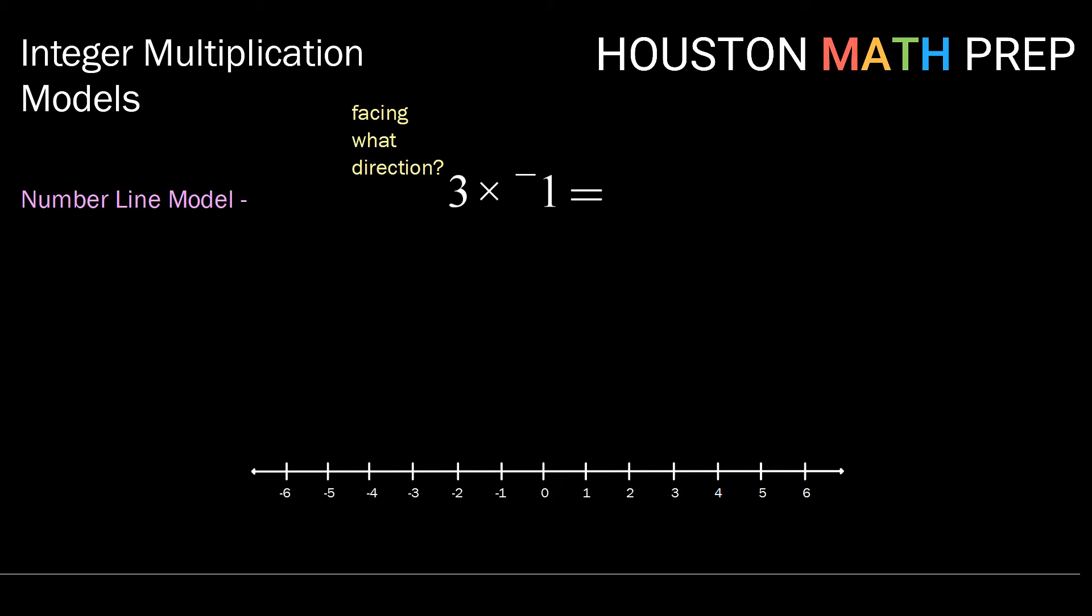Our first number, or the sign of our first number, tells us what direction to begin facing. Since we have a positive 3, we're going to begin facing towards the positives, or to the right. That number also tells us how many steps we're going to take. So we are going to be taking 3 steps.